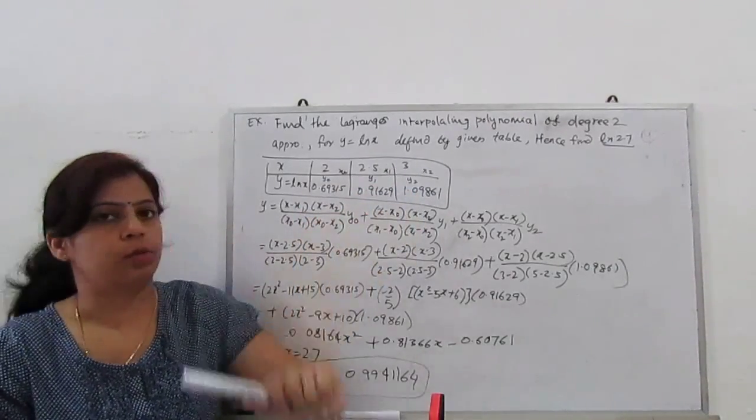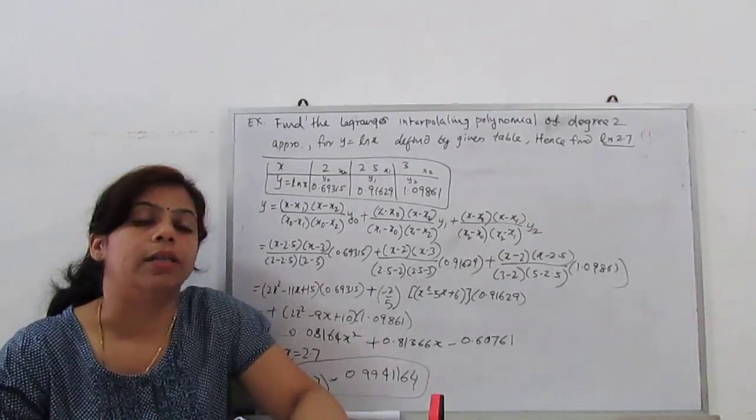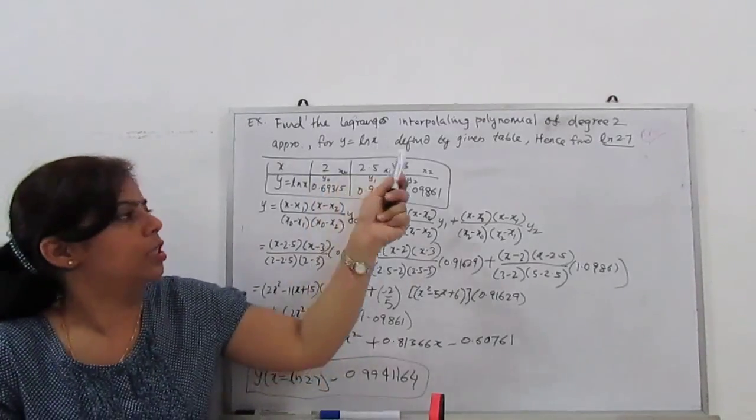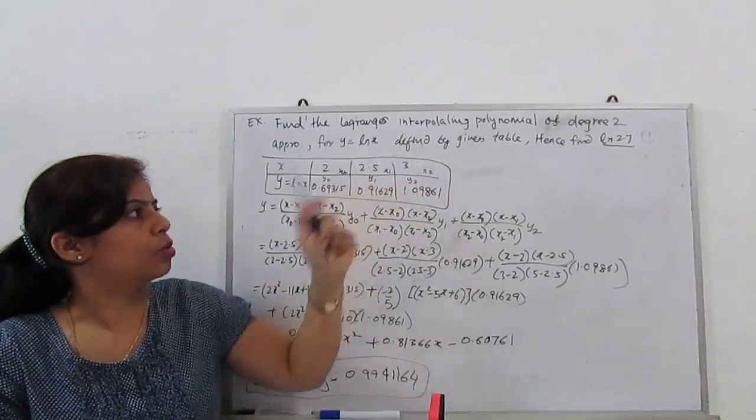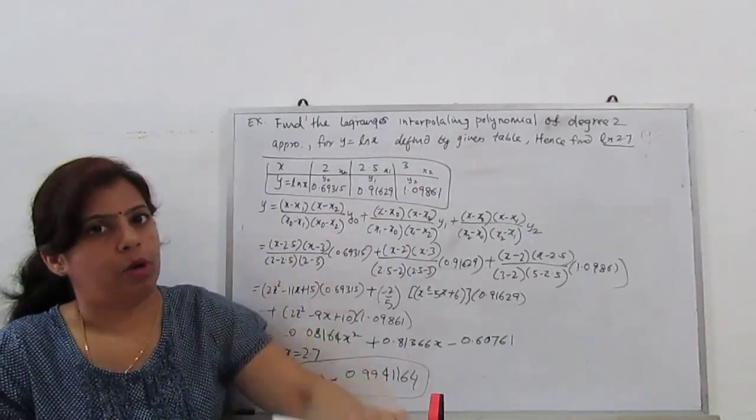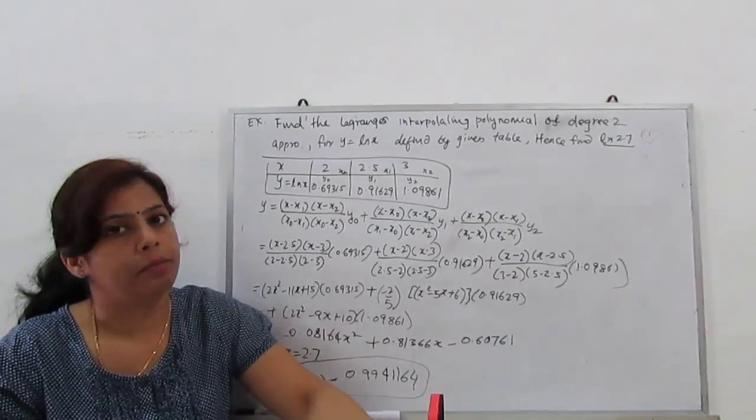Respectively y is given by this. So x0 is 2, x1 is 2.5, x2 is 3, with y0, y1, y2.